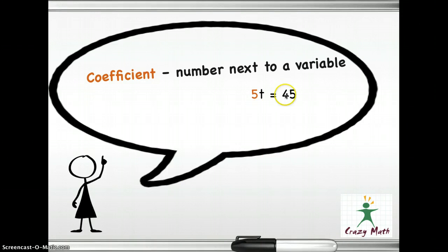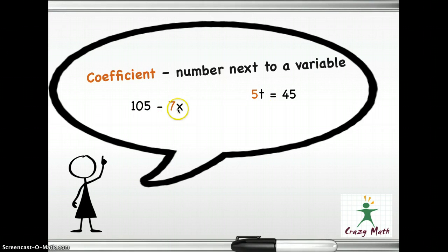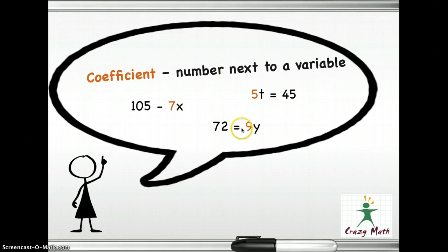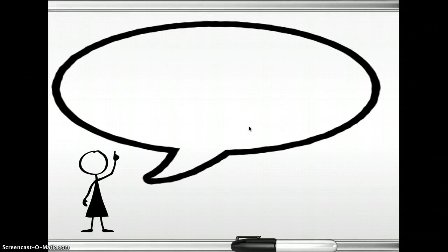For 5t equals 45, 5 is the coefficient — it's the number next to your variable. You have 105 minus 7x — negative 7 is the coefficient. For 72 equals 9y, or 9 times y, 9 is the coefficient.